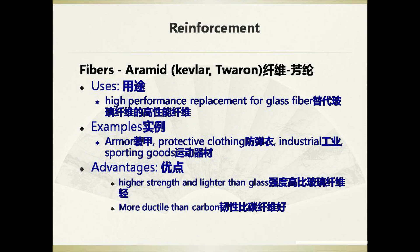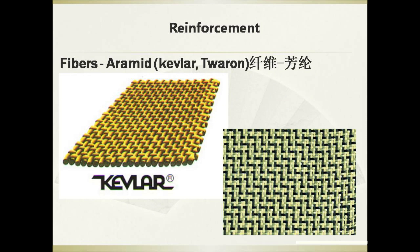Another widely used fiber is aramid, including Kevlar and Twaron. They are often used as a high-performance replacement for glass fiber, for example in armor, protective clothing, industrial, and sporting goods applications. The advantages of aramid are high strength, lighter than glass, and more ductile than carbon.